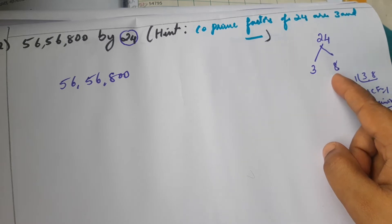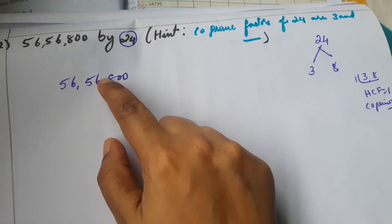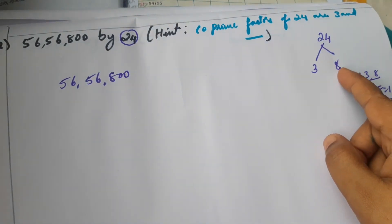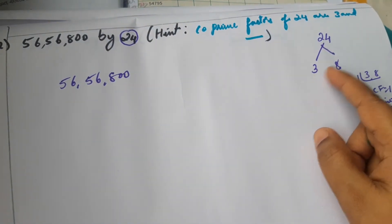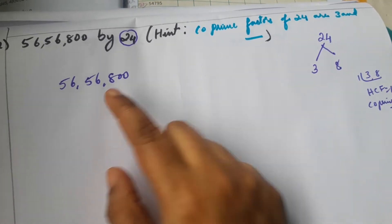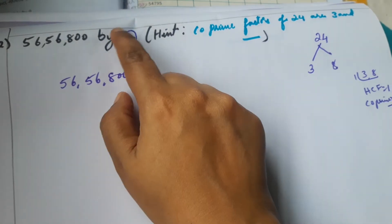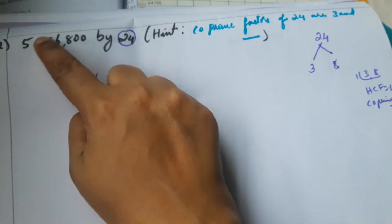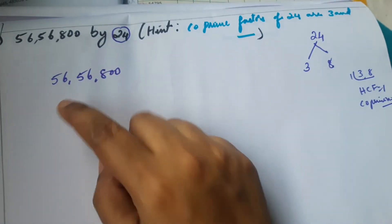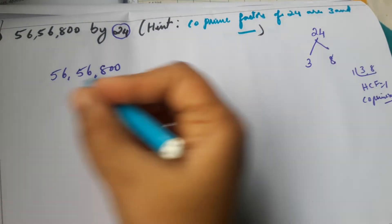For the rule of 8: if the last three digits of the number are divisible by 8, then the whole number is divisible by 8. If both conditions hold, the number will be perfectly divisible by 24.